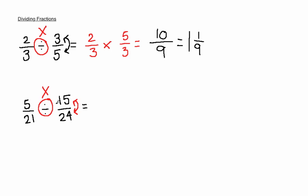So this question then becomes 5 over 21 multiplied by 24 over 15. Now in this particular example there is plenty of cancelling down to be done.